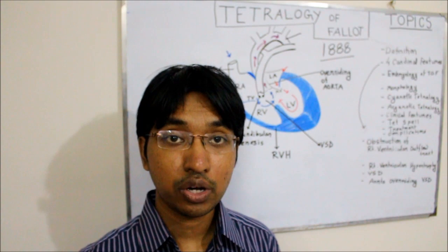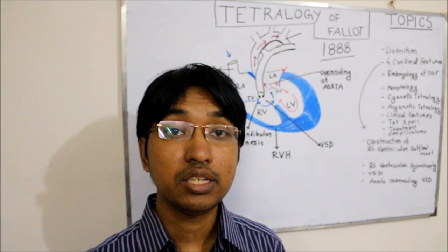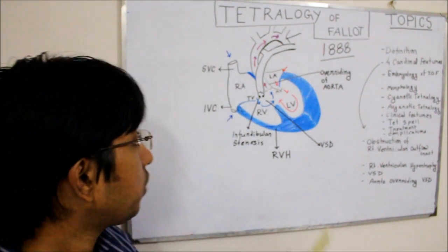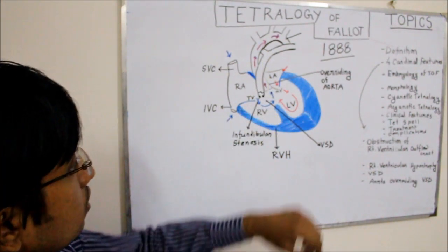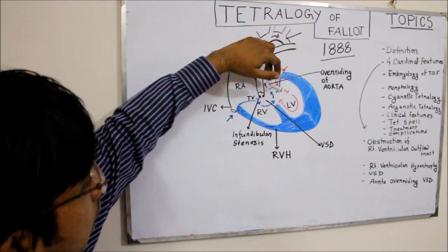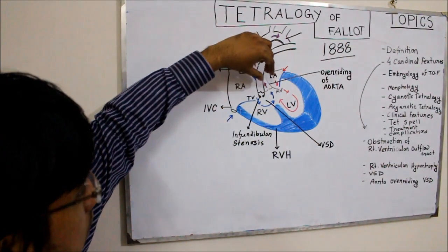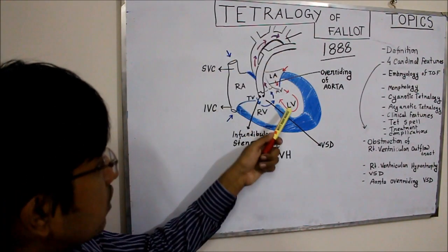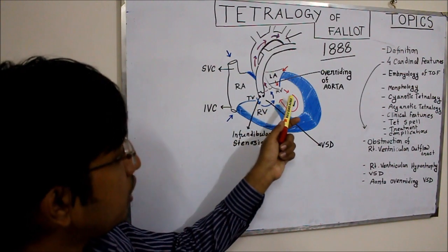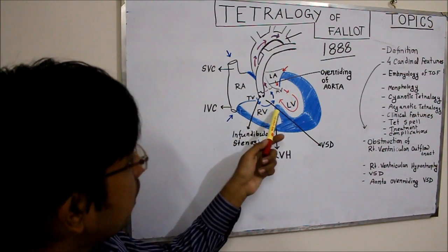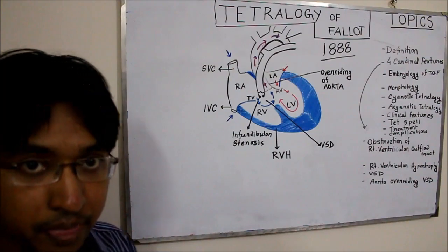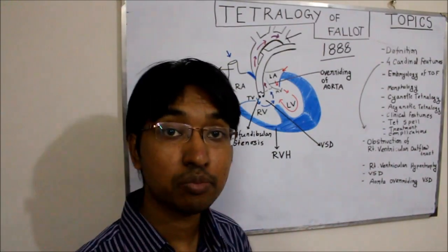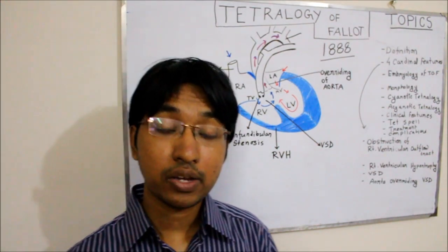The fourth component of Tetralogy of Fallot is the aorta overriding the VSD. The aorta is placed just over the VSD, so that right ventricular blood, when it moves to the left ventricle, can easily enter the aorta. Since this right ventricular blood is oxygen-poor, that results in cyanosis.